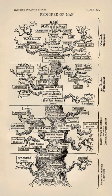Genetic processes work in combination with an organism's environment and experiences to influence development and behavior, often referred to as nature versus nurture. The intracellular or extracellular environment of a cell or organism may switch gene transcription on or off.